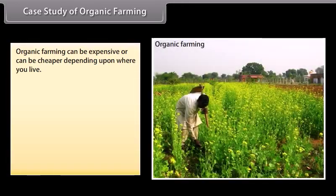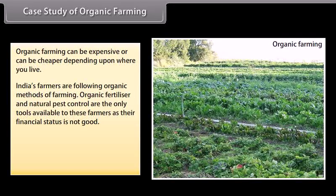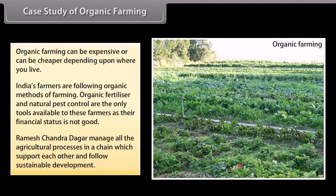Case Study: Organic Farming. Organic farming can be expensive or cheaper depending upon where you live. India's farmers are following organic methods of farming. Organic fertilizer and natural pest control are the only tools available to these farmers as their financial status is not good. Ramesh Chandra Dagar manages all the agricultural processes in a chain which supports each other and follows sustainable development.